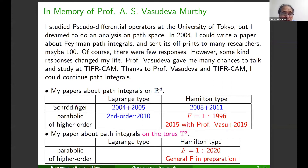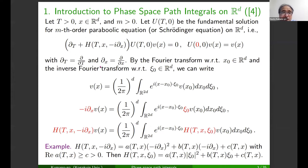Thanks to Professor Deba and the TIFR camp, I could continue with path integrals. My paper treats the Schrödinger equation, the parabolic equation, in Euclidean space and the torus case. Today I mainly talk about the phase space path integral of parabolic type. Let me introduce the phase space path integrals: capital T is a time parameter and x runs in R^d.